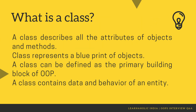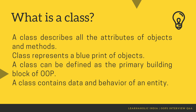The next question is: what is a class? A class describes all the attributes of objects and their methods. A class represents a blueprint of objects. A class can be defined as the primary building block of object oriented programming. A class contains the data and behavior of an entity. A class is a category of objects — it defines all the common properties of the different objects that belong to it. For example, an aircraft class can contain data such as model number, category, and color, and behavior such as duration of flight, speed, and number of passengers. A class inherits the data members and behavior of other classes by extending from them.